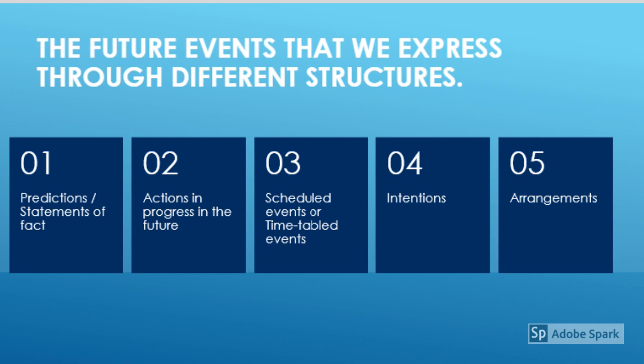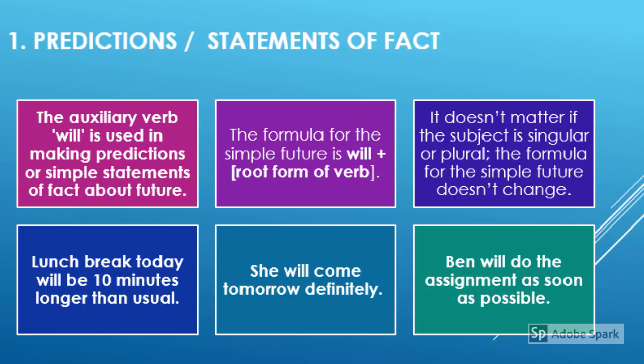As we discussed earlier, different structures of future tense can be used to express different future events: predictions or statements of fact; actions in progress in the future; scheduled or timetabled events; intentions; and arrangements. If we are predicting or forecasting something that can happen in the future, we use the auxiliary verb will in simple future tense. The formula for simple future is will plus root form of verb. It doesn't matter if the subject is singular or plural — the formula doesn't change.